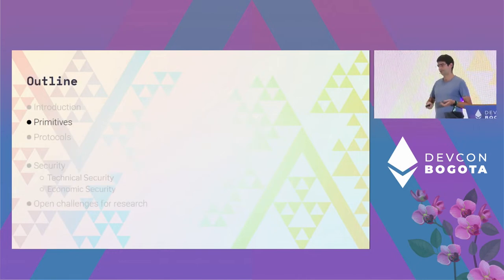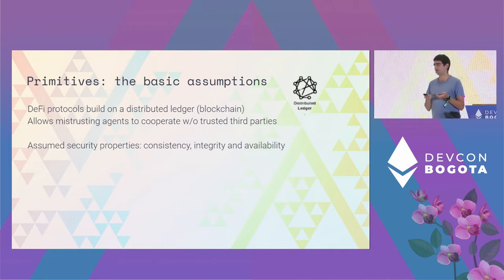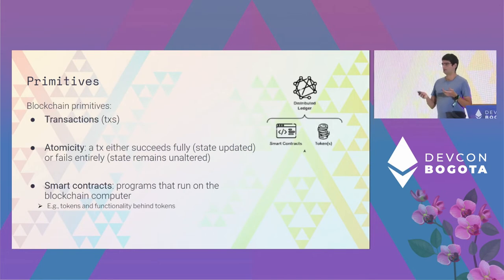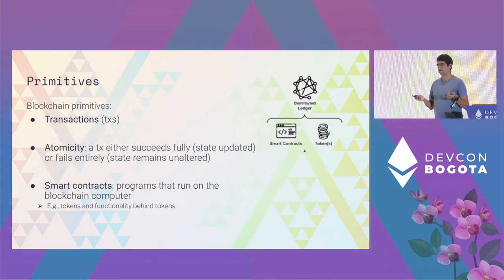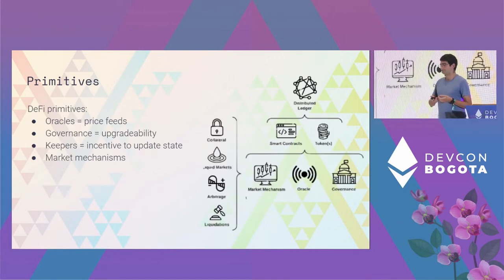Before diving into security, we'll give some background on the primitives needed for DeFi. All DeFi protocols rely on an underlying blockchain and assume security properties: consistency, integrity, and availability. One blockchain property I want to highlight is atomicity — if a transaction starts, it will either succeed completely or revert; there cannot be a half transaction. And obviously, DeFi relies on smart contracts, which are programs that run on the blockchain.